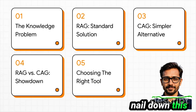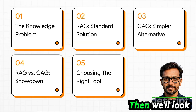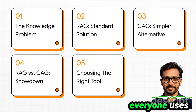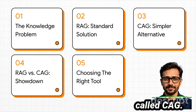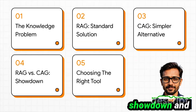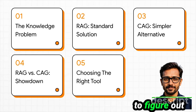We'll really nail down this knowledge problem. Then we'll look at the standard solution that everyone uses, called RAG, and a simpler, newer alternative called CAG. After that, we'll put them head to head in a showdown and wrap up with a simple way to figure out which tool is right for you.